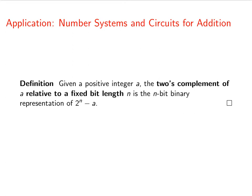Given a positive integer a, the two's complement of a relative to a fixed bit length n is the n-bit binary representation of 2 to the n minus a. So we have to decide on a bit length that we're going to use and that's going to tell us how to compute the two's complement.